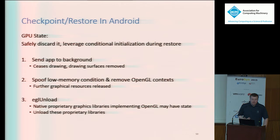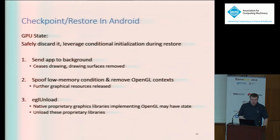Because of this, we handle GPU state simply by safely discarding it and then leveraging conditional initialization during restoration — the GPU state will be recreated once the app has been migrated and brought back to the foreground. To discard GPU state, we first send the app to the background, which causes the app to cease drawing and its drawing surfaces to be removed. We then leverage Android's existing low memory handling capabilities to spoof a low memory condition, causing the app to release further graphical resources such as shaders and cached textures, and we remove the OpenGL context here. Android uses proprietary native libraries to implement device-specific OpenGL state details, which may have lingering state we can't access. To eliminate this, we extend the generic Android OpenGL interface to add an EGL unload function, which unloads these proprietary graphics libraries and their state. Once the app is resumed, the initialization code will see that the proprietary libraries haven't been loaded and will load the new device's libraries.